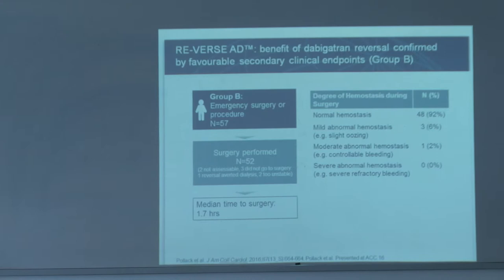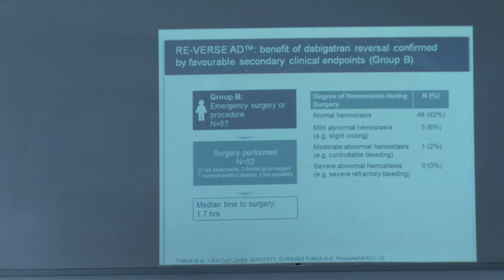For the Group B patients who had surgery, normal haemostasis was achieved in more than 90% of patients. The time to surgery was 1.7 hours, confirming that Praxbind is effective in this setting.